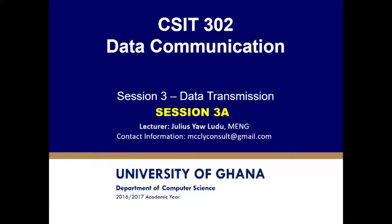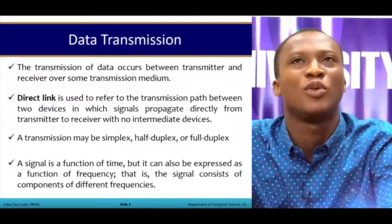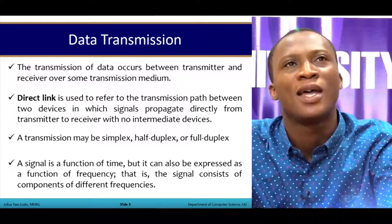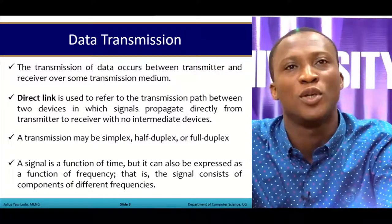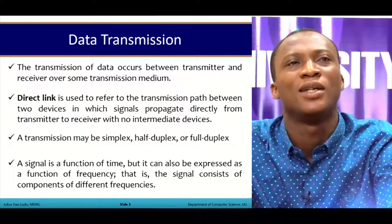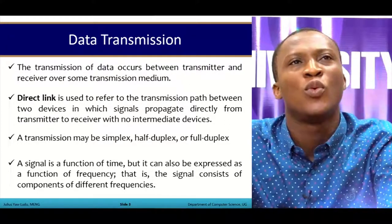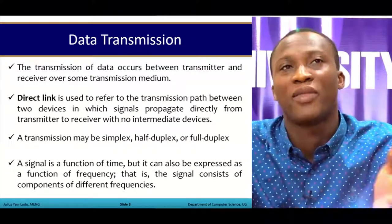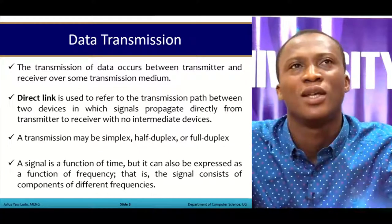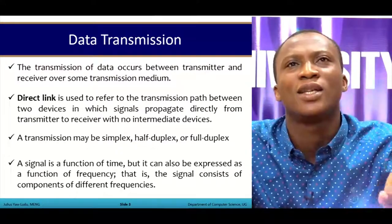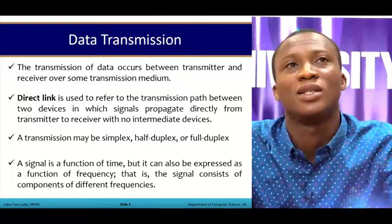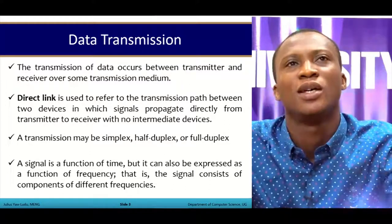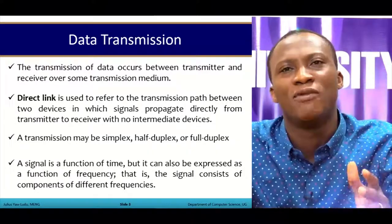Hello, welcome to session 3 of data communication. In this session we will be looking at data transmission. Transmission of data occurs between the transmitter and the receiver over some transmission medium, which we've seen in an earlier slide. Now here we will talk about the direct link. The direct link is used to refer to the transmission path between these two devices, the receiver and the transmitter, where a signal is propagated directly from the transmitter to the receiver with no intermediate devices.